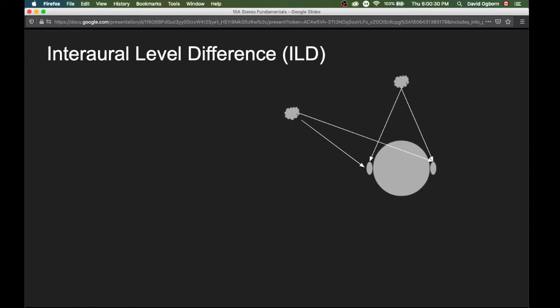Let's talk about interaural level difference first. When a sound is on axis, in other words when it's centered with respect to two ears, it has the same distance to travel to each ear.